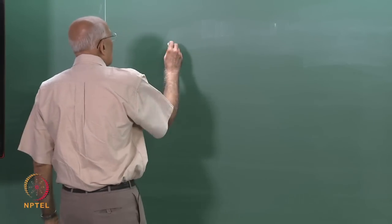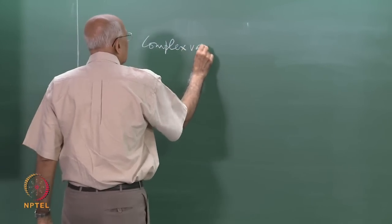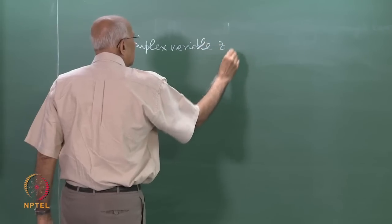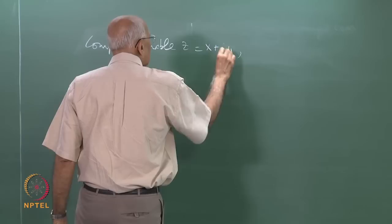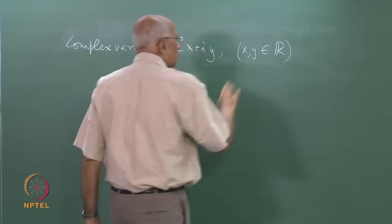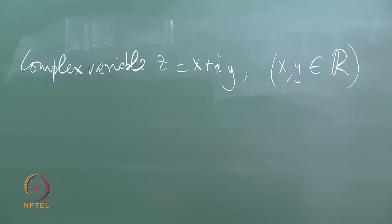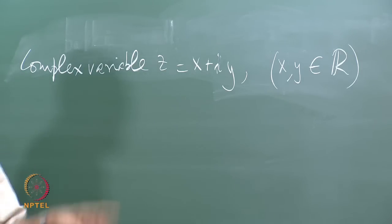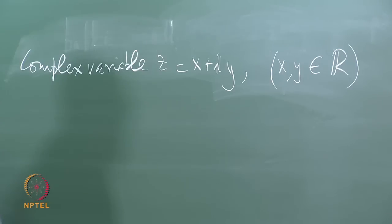Recall that we define a complex variable z as x plus i y, where x and y are elements of the real number line. This complex plane, the x-y plane, is called the complex plane, and we are going to talk about functions which are analytic functions in a specific sense of this combination x plus i y.